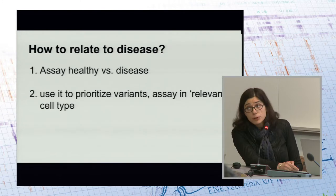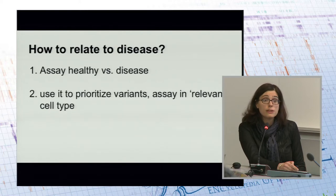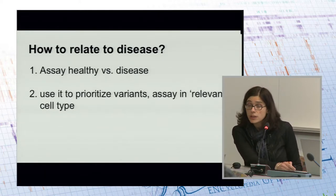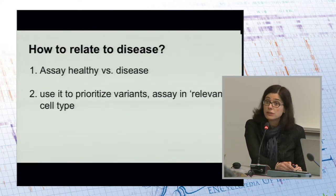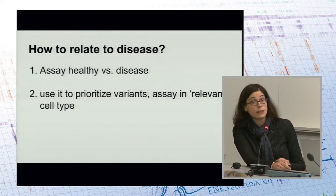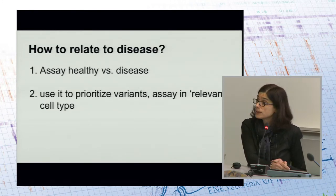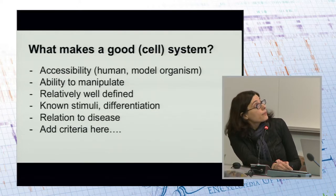There is the specific question of how to relate to disease — two models for that. One is to work with disease samples, either within themselves or compared to healthy samples. The second is to use the genetics of disease, which has already advanced substantially, in order to prioritize variants one would want to assay for function, doing it in the relevant cell type if that cell type is known and available.